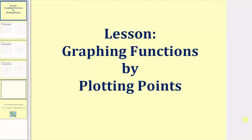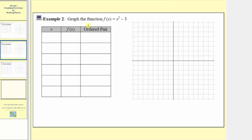Welcome to part two of the lesson on graphing functions by plotting points. In example two, we want to graph the function f of x equals x squared minus three, where the input is x and the output is f of x. Notice how the function rule subtracts three from the square of the input.